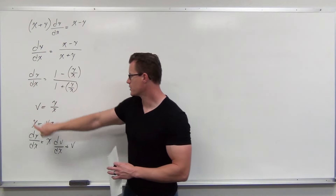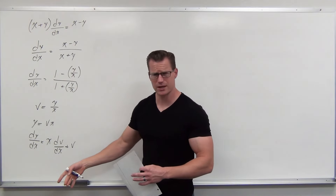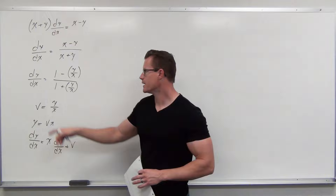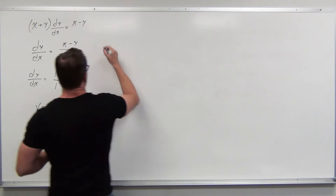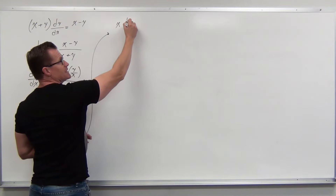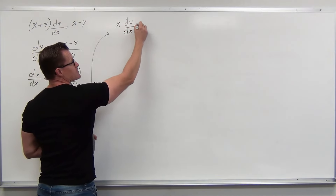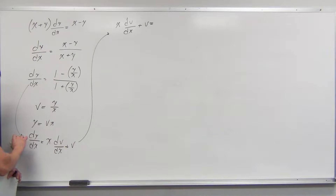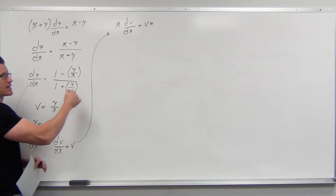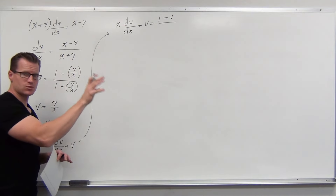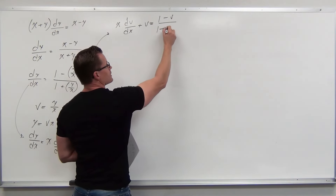Textbooks sometimes make this look like magic — where did it come from? But here, dy/dx equals x(dv/dx) + v on the left-hand side, and (1 minus v)/(1 plus v) on the right-hand side. So we substitute: dy/dx becomes x(dv/dx) + v, the right-hand side still has 1 minus y/x which becomes 1 minus v, and 1 plus v in the denominator.